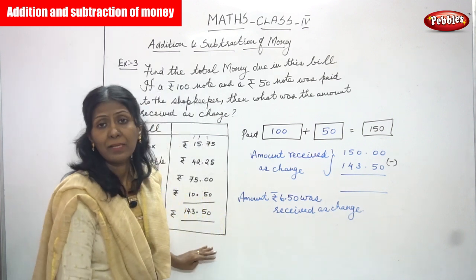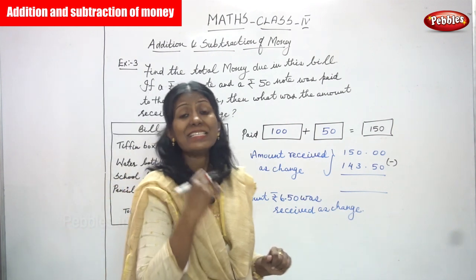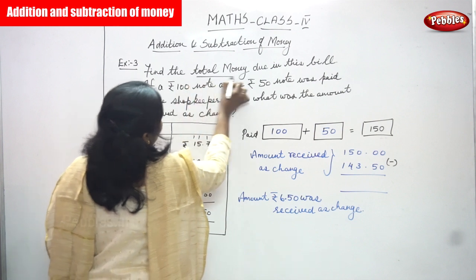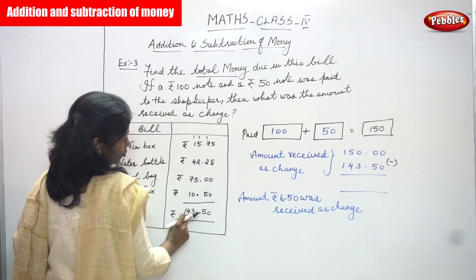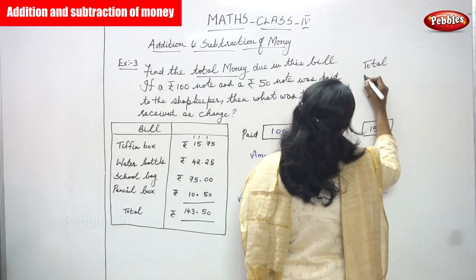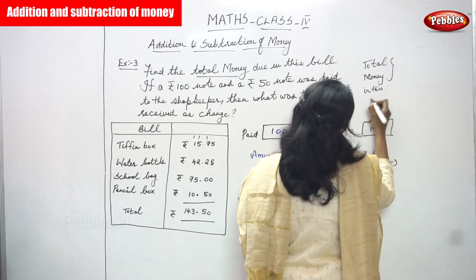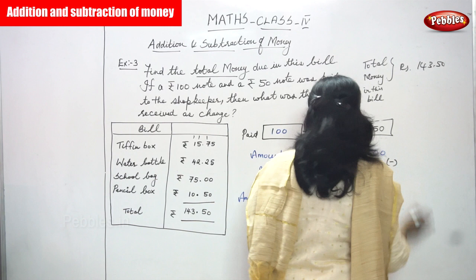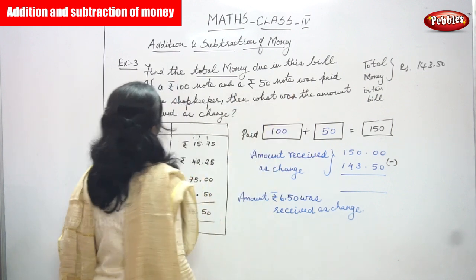This is the bill prepared by the shopkeeper. This amount he has to give to the shopkeeper. But he has given 150 rupees already. The total money in this bill is rupees 143.50 paise. If a rupees 100 note and a rupees 50 note was paid to the shopkeeper — that is 150 rupees.